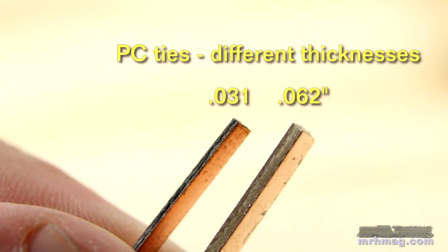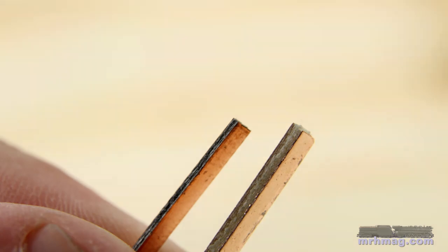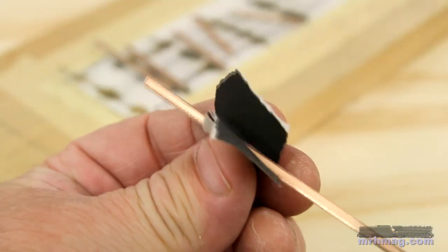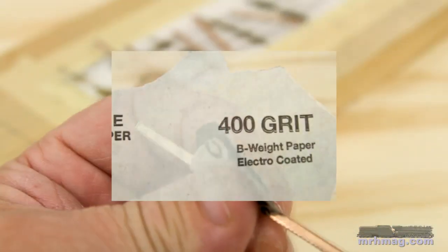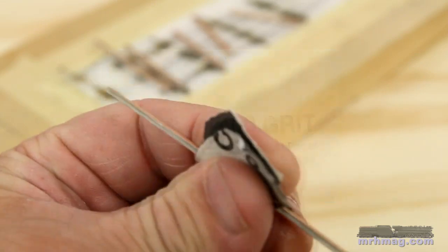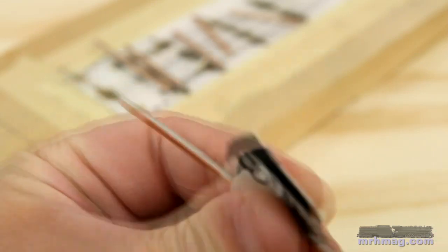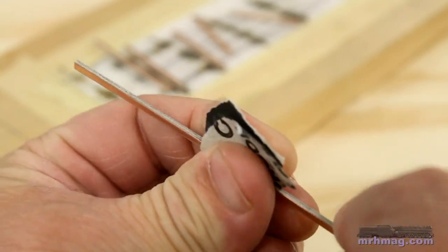PC ties come in different thicknesses. For HO scale, I like the Clover House 62,000th thick ties. These also work in a Fast Tracks turnout jig. I start by prepping the PC ties using some 400 grit sandpaper to smooth rough edges. Rough edges are especially bad near the points, as they can prevent the points from moving smoothly.